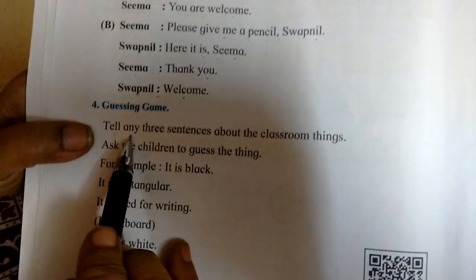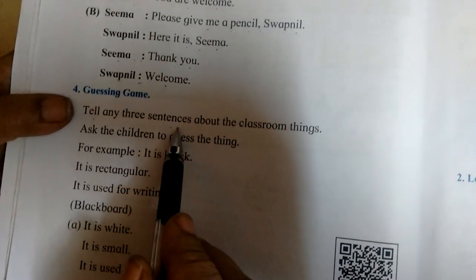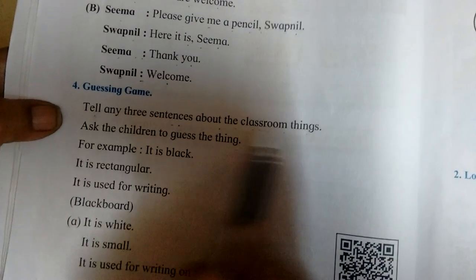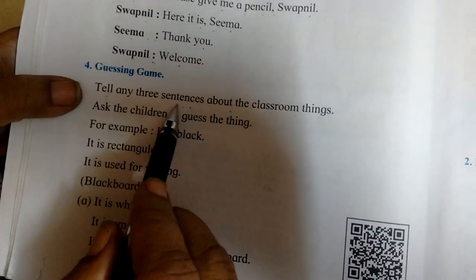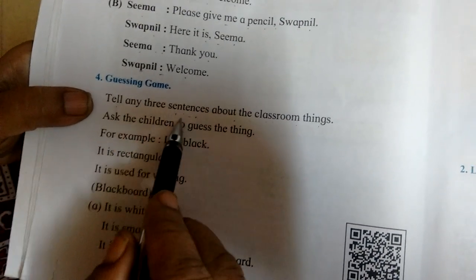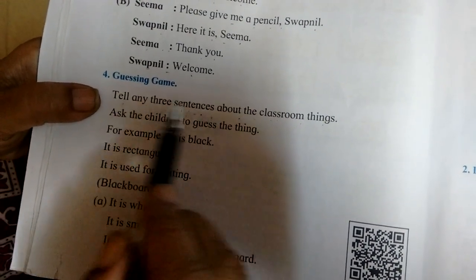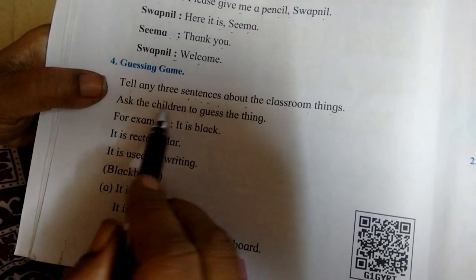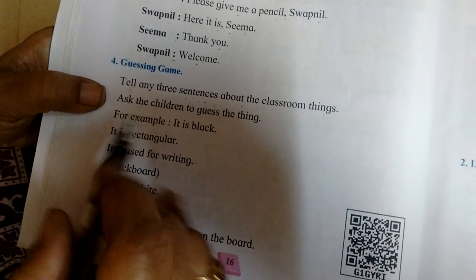Tell any three sentences about classroom things. For example: 'In my classroom, we have six benches. In my classroom, we have one blackboard.' Like this, you have to make three sentences.